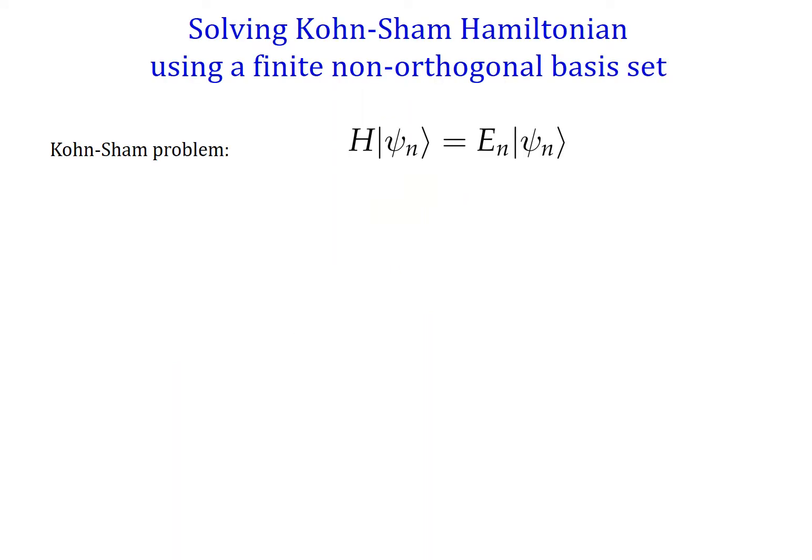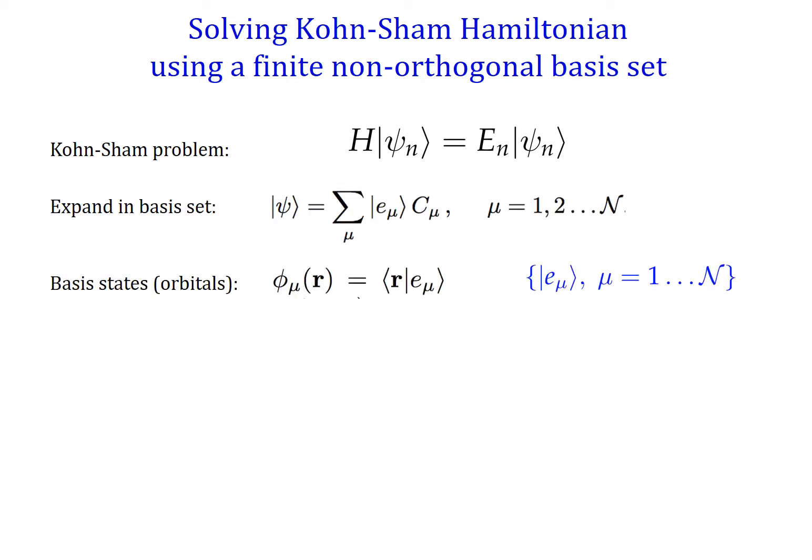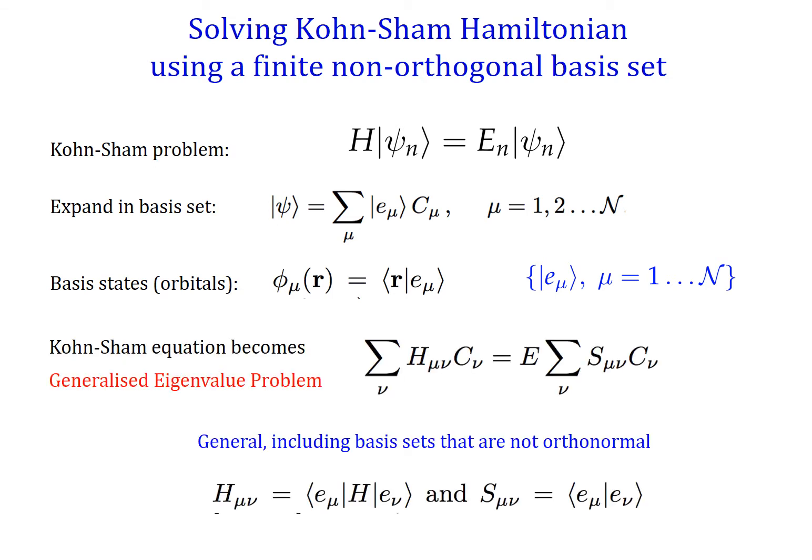Let us start by seeing why we do need the basis at all. We start with the Kohn-Sham problem in which we have to solve a Schrödinger-like equation. If we expand the states we are looking for in terms of a known set of basis functions — the φ's in the ket representation, denoted E sub μ — we can then transform the initial Kohn-Sham problem into a different kind of problem.